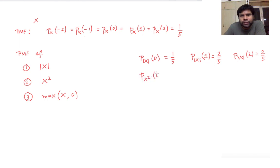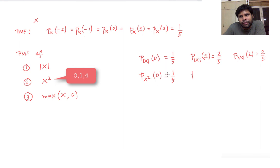We can similarly find the PMF of X squared. You can verify that X squared takes three values: 0, 1, and 4, with corresponding probabilities. I'll leave it as an exercise for you to figure out why you get these values.